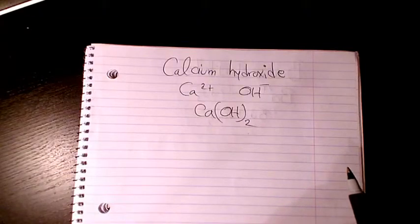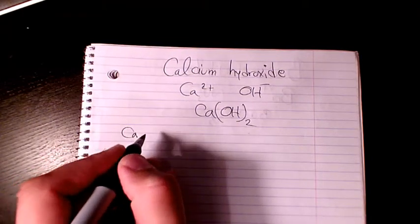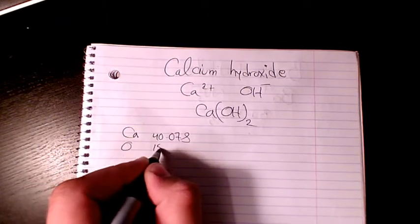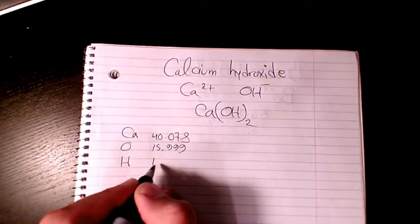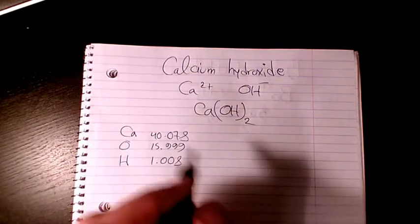So we have calcium, oxygen, and hydrogen. The atomic mass of calcium is 40.078, oxygen is 15.999, and hydrogen is 1.008. How many atoms of calcium do we have? We have just one.